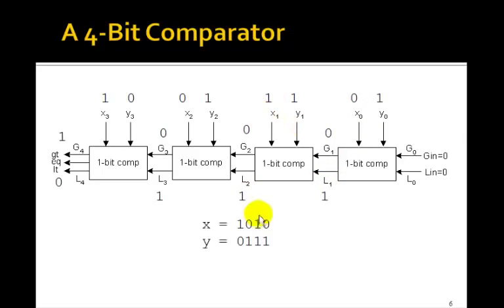Now the next bit, you see x1 is equal to y1, they're both 1. So in that case, since l1 is 1, it just gets passed through. So you've got a 1 here, this g is 0.